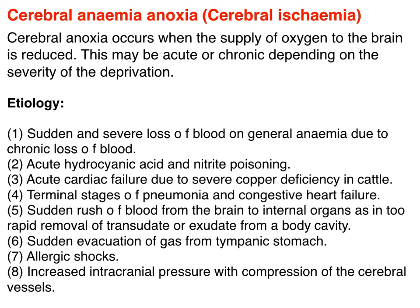Cerebral anemia, anoxia, or cerebral ischemia occurs when the supply of oxygen to the brain is reduced. This may be acute or chronic depending on the severity of deprivation. Etiology includes sudden severe loss of blood or general anemia, acute hydrocyanic acid or nitrate poisoning, acute cardiac failure such as falling disease and copper deficiency in cattle, terminal states of pneumonia and congestive heart failure, sudden rush of blood from the brain to internal organs, sudden evacuation of gases from tympanic stomach, allergic shock, and increased intracranial pressure.